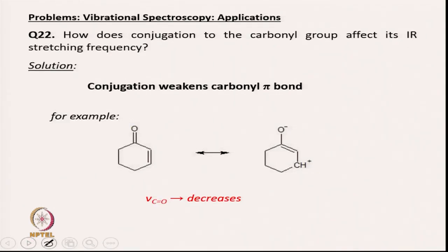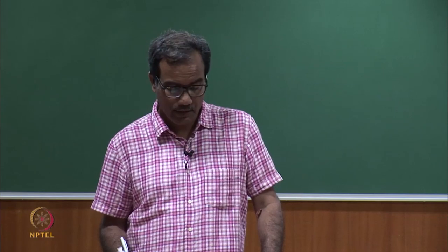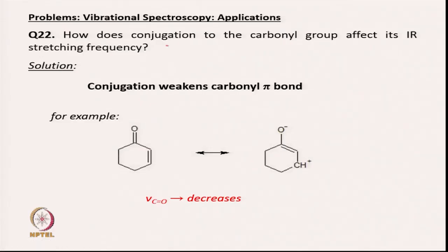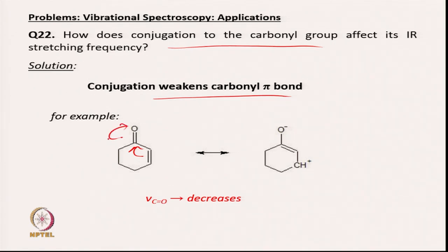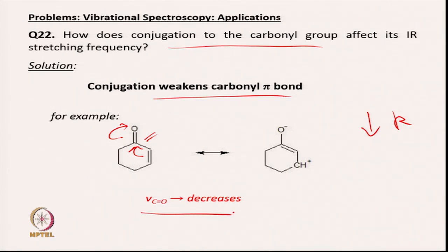Now let us look at application-based questions in vibrational spectroscopy. How does conjugation affect the carbonyl group's IR stretching frequency? Conjugation weakens the carbonyl π bond — resonance gives the C=O partial single bond character, decreasing the force constant K. Since frequency = (1/2π)√(K/μ), decreasing K decreases the CO stretching frequency.